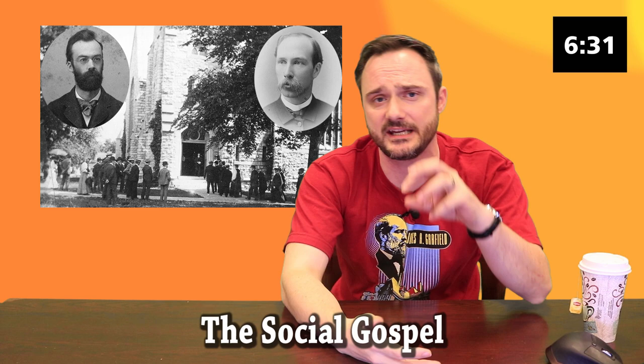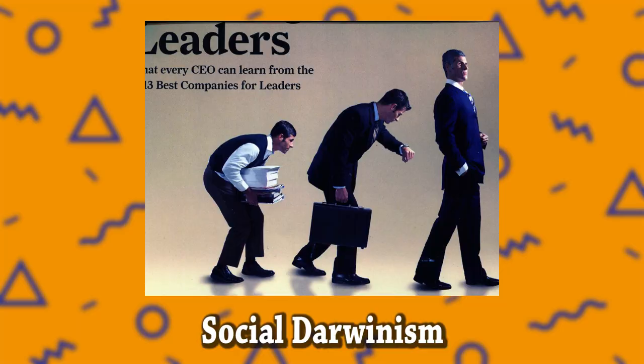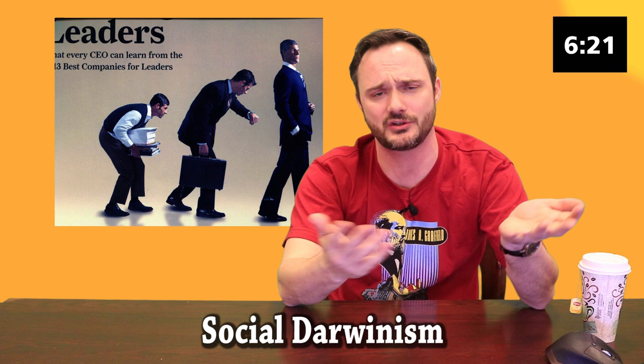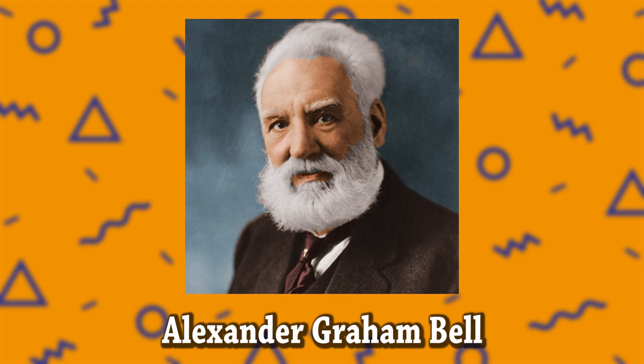The Social Gospel was a religiously motivated movement that tried to improve industrial society through charity, settlement houses, and labor reforms. Social Darwinism, on the other hand, said the rich are rich and the poor are poor because of natural selection, and that some races are biologically superior to others.